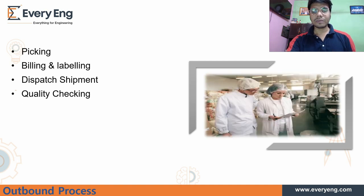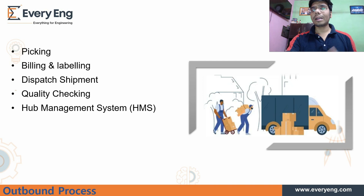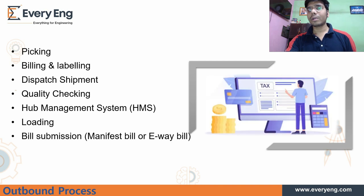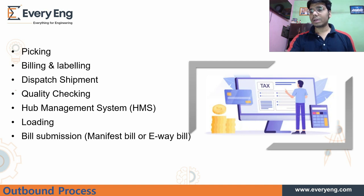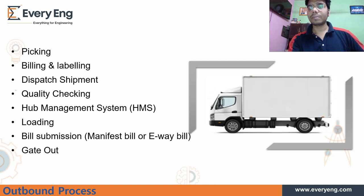Before loading, we check the quality of the product to ensure the correct item was picked from inventory — this is quality checking. After dispatch, we place the product into its hub. For example, a product going to Kolkata is placed into the Kolkata hub — this is called the Hub Management System (HMS). We then load the vehicle with the product and submit the bill to the truck driver.